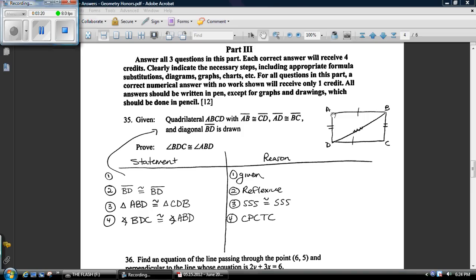35, we've got to do a proof. First thing you want to do is just draw a picture. Mine looks like a rectangle, it's not though. It's just a quadrilateral four-sided shape. AB is congruent to CD and AD is congruent to BC. That's the given. I said that BD, this diagonal right here is reflexive.